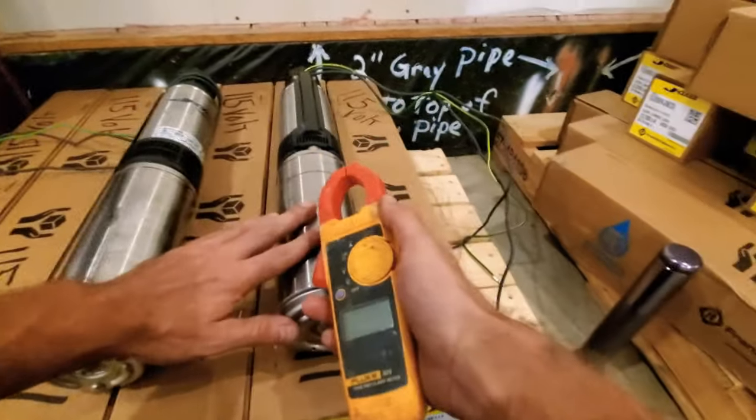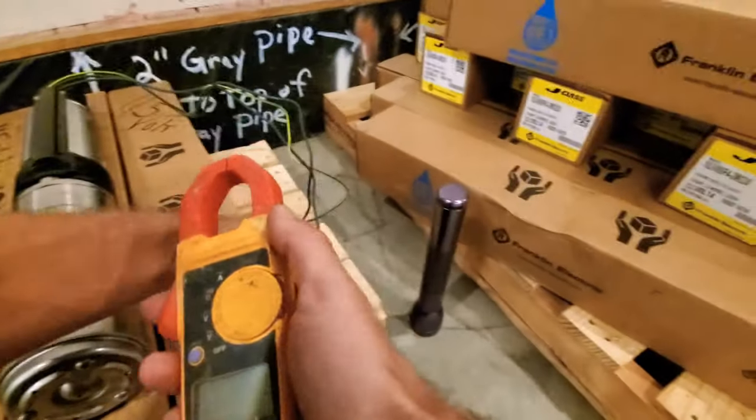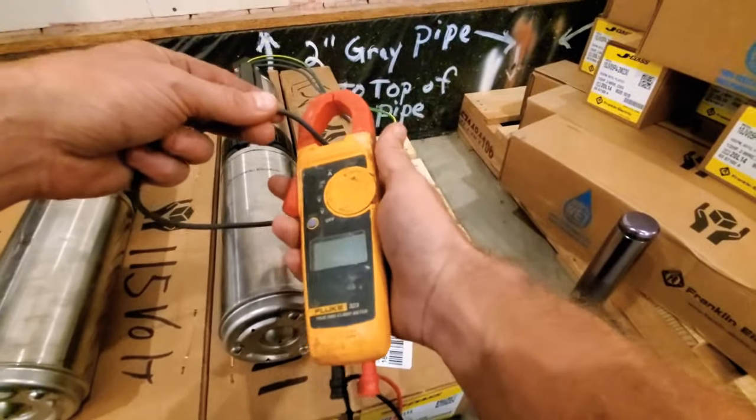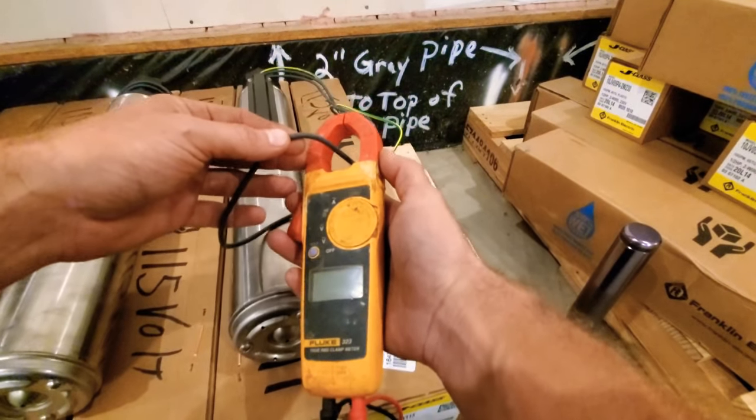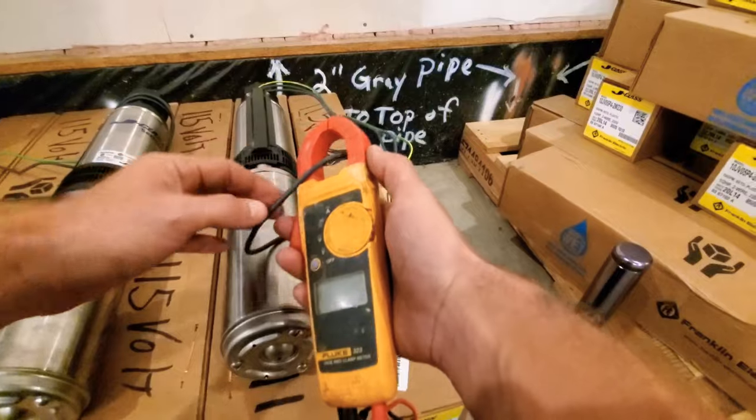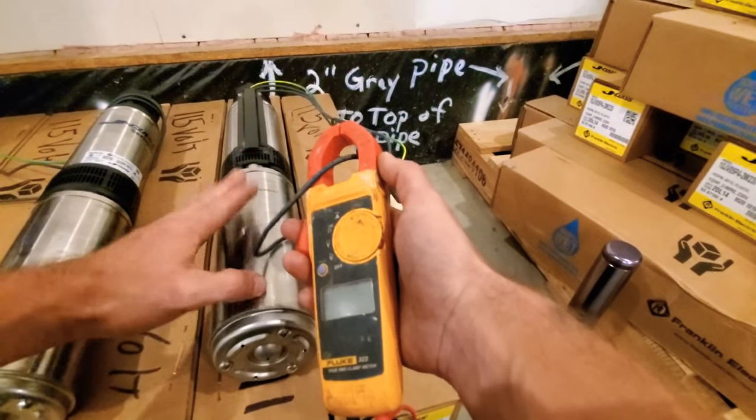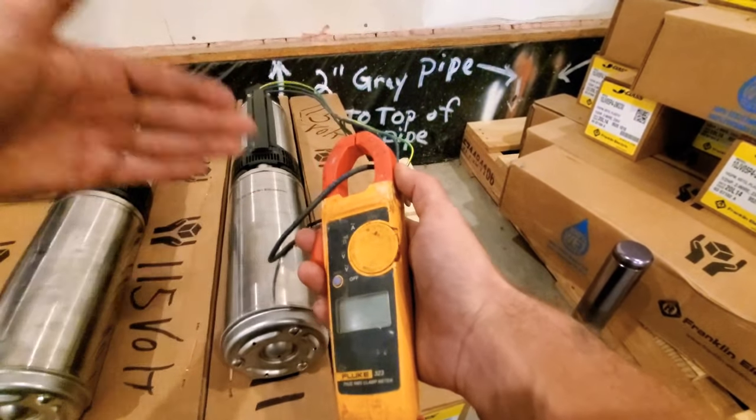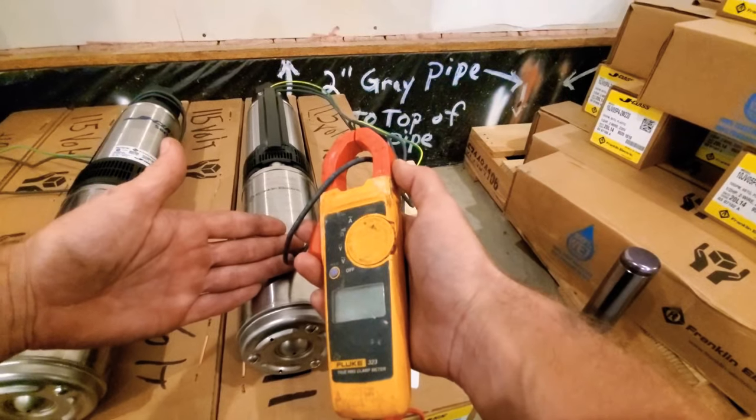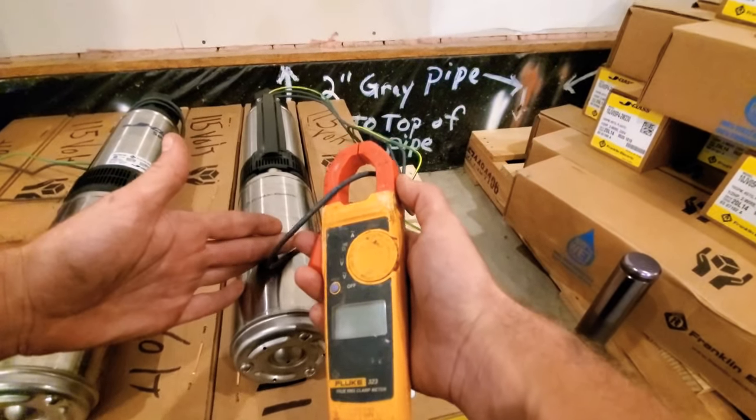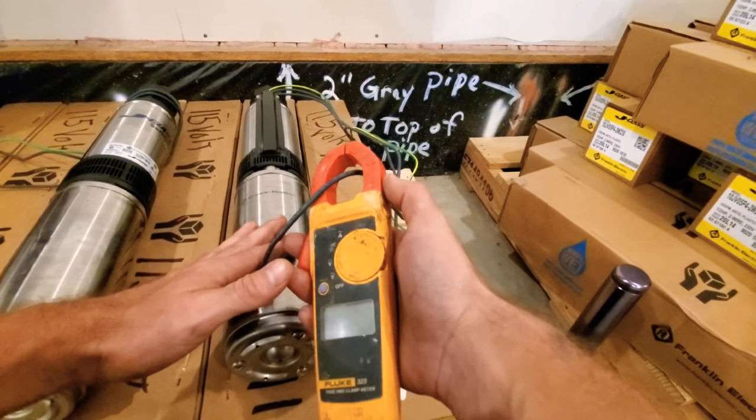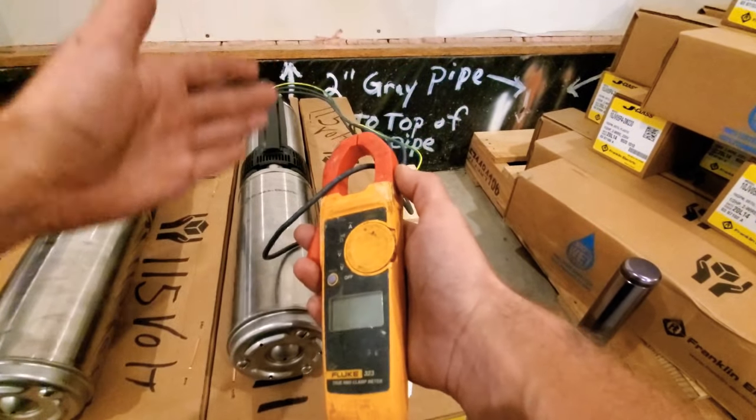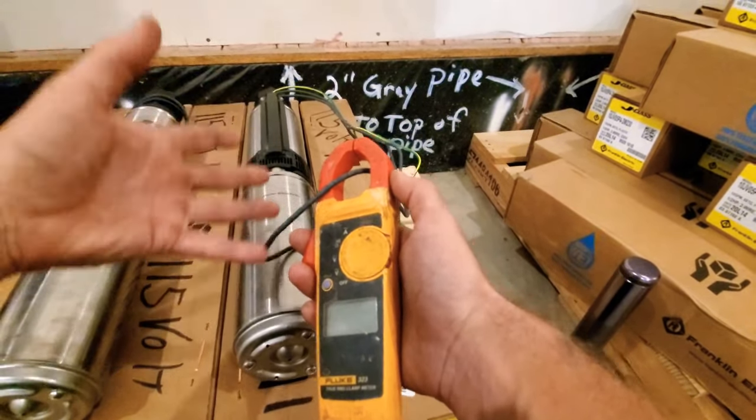If you come over here to the 240 volt well pump and you clamp it around one of the wires, you should read somewhere around six to six and a half, maybe seven amps, all depends on whatever manufacturer made that motor. A half horsepower is going to pull six amps, three quarters going to pull closer to seven, and a one horsepower is going to pull closer to nine.